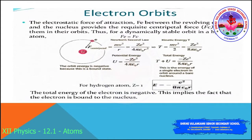Rutherford explained the electrostatic force of attraction between the revolving electron and the nucleus, which provides the requisite centripetal force FC to keep them in their orbits. For a dynamically stable orbit in a hydrogen atom, we must have FE equal to FC — that is, the electrostatic force of attraction equal to the centripetal force.